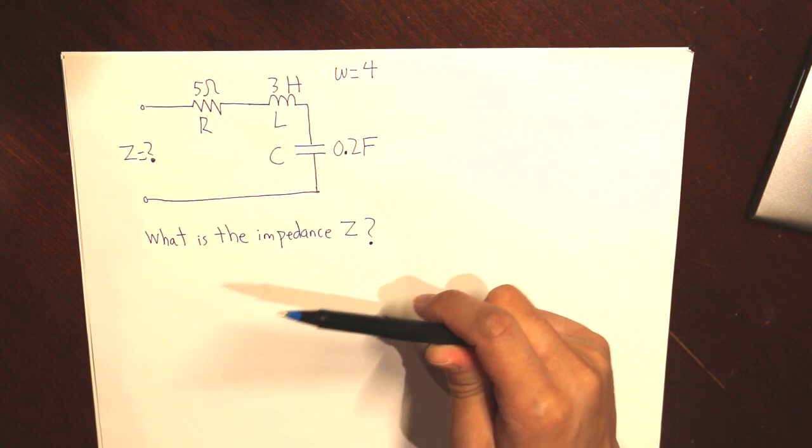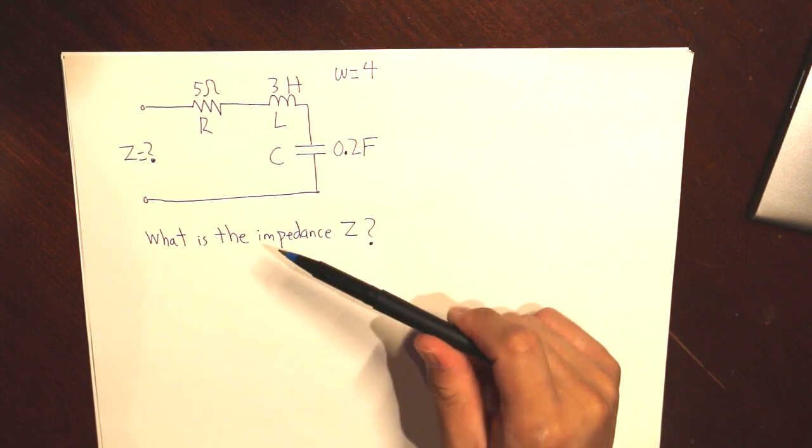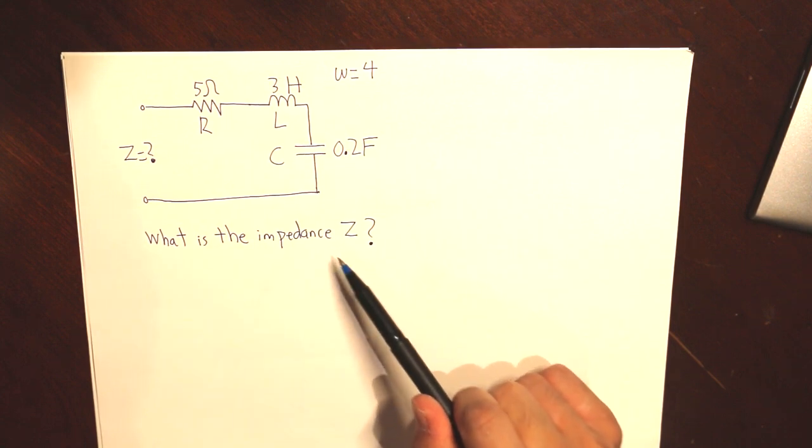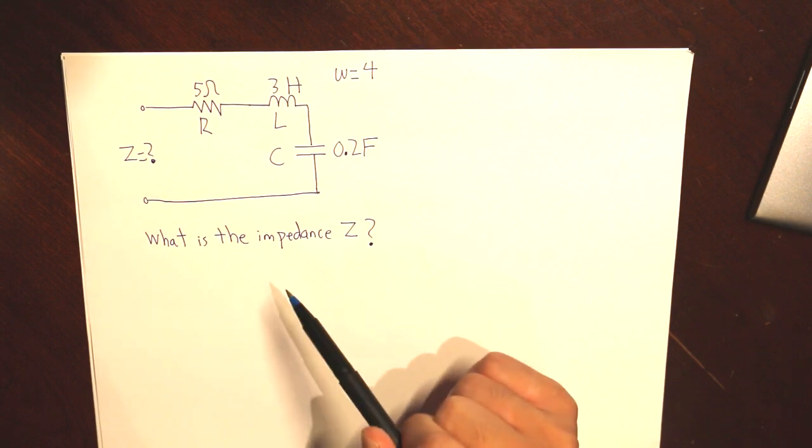Now that you know how to calculate complex numbers, let's see how we can calculate the impedance Z, given the understanding of phasors.